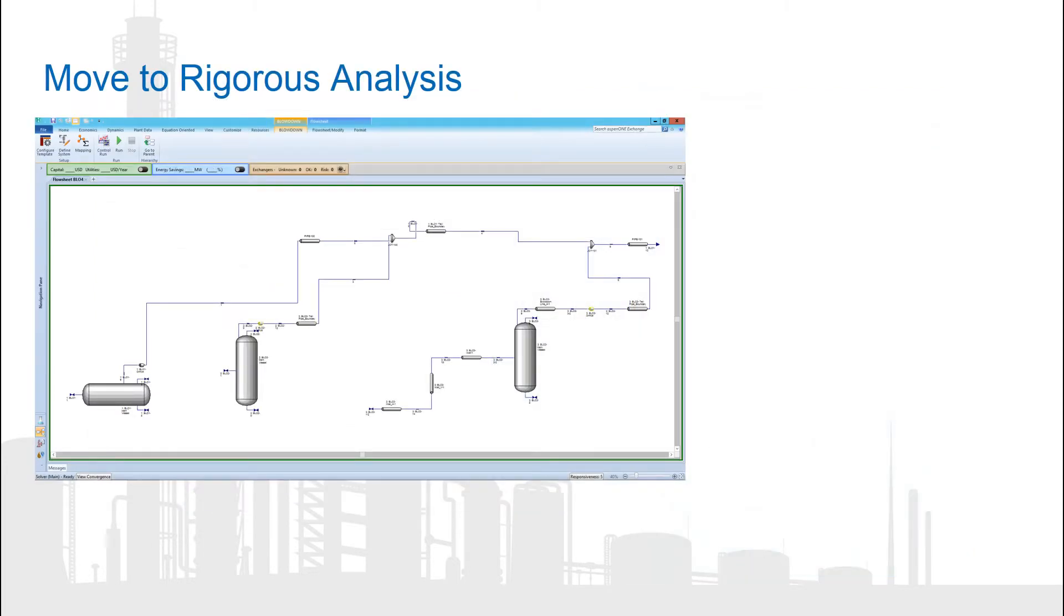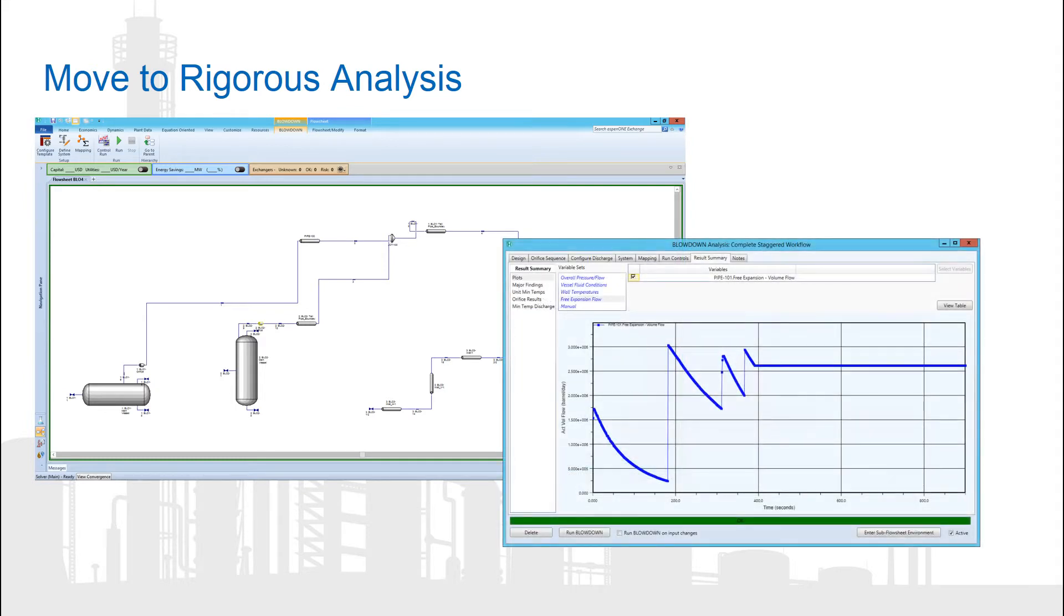Use the rigorous Staggered Blowdown capability to build a more rigorous flow sheet with multiple blowdown systems discharging to a common disposal system, all while also including line packing effects.